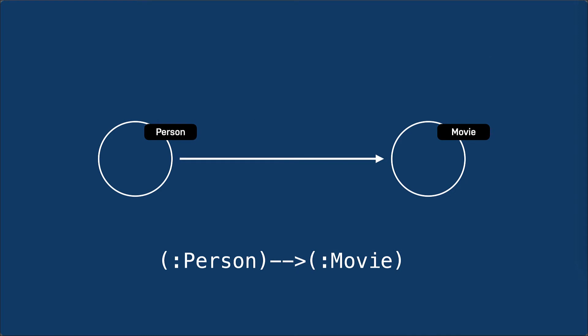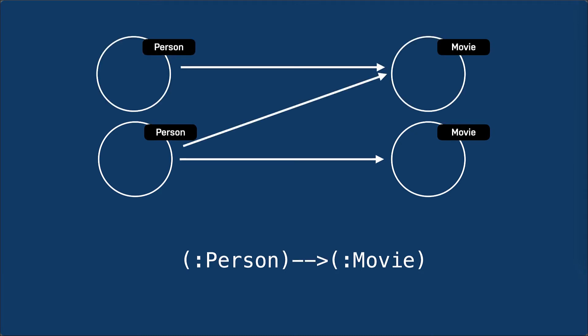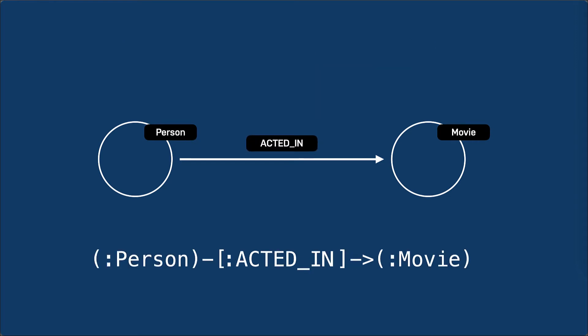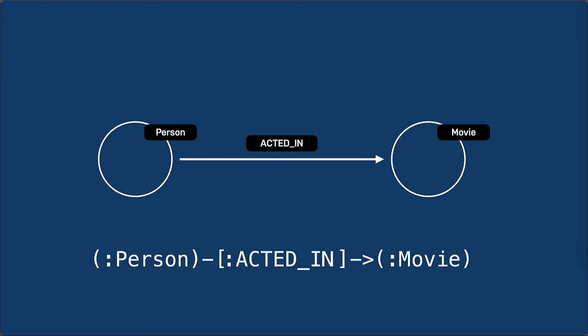In our Cypher pattern, we have not specified a relationship type, so this pattern will retrieve nodes that are related with any relationship. If we want to retrieve only nodes with a specific relationship, we specify the relationship type in the pattern. We use the square brackets containing colon relationship type for specifying the relationship. So this pattern will retrieve person nodes that have the ACTED_IN relationship to movie nodes.